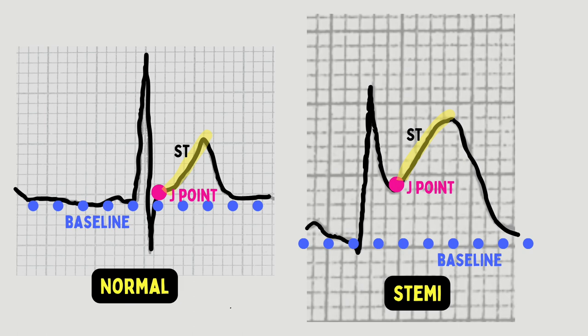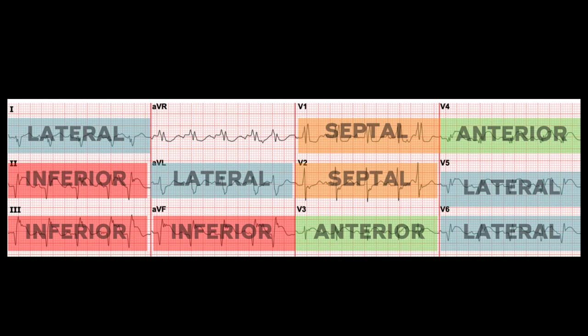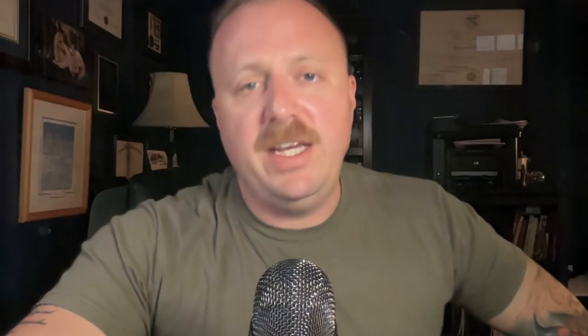When you are looking at ST elevation, you want to find the J point. If the J point is elevated, then that can be considered to be legitimate ST segment elevation. To identify a STEMI, there needs to be at least one millimeter of ST elevation — that's one small box — in two or more contiguous areas. That's at least one millimeter of ST elevation from the baseline or the isoelectric line.